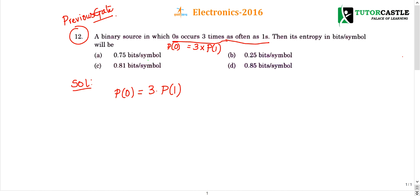We already know that total probability is always one, meaning probability of zero plus probability of one equals one. So I will simplify these two equations to get p of zero and p of one.